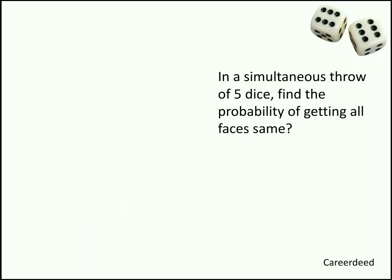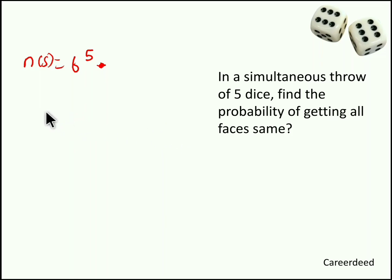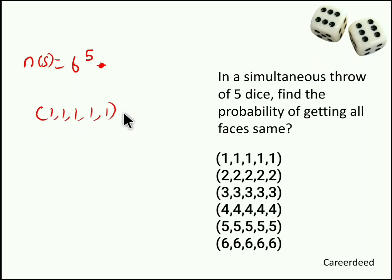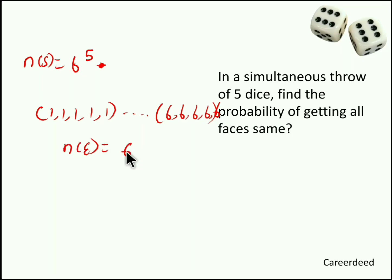In a simultaneous throw of 5 dice, find the probability of getting all faces the same. Total sample space = 6⁵. All faces same means getting (1,1,1,1,1) or (2,2,2,2,2) up to (6,6,6,6,6) — totally 6 such events. So the probability is 6/6⁵ = 1/6⁴ = 1/1296.